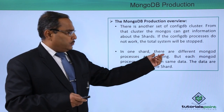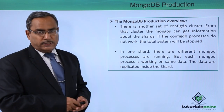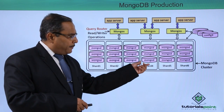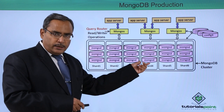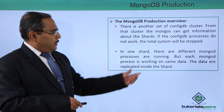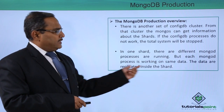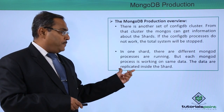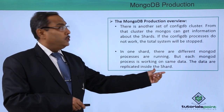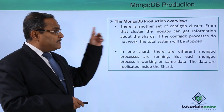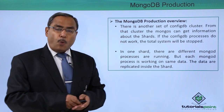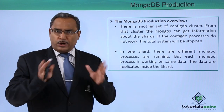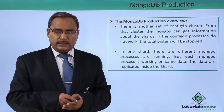In one shard, there are different MongoDB processes running. As we have seen in the previous diagram, we are having multiple MongoDB processes running in one shard. Each MongoDB process is working on the same data, and that data has been replicated inside the shard. This is the basic concept of MongoDB production and how these processes are working in a collaborative way.